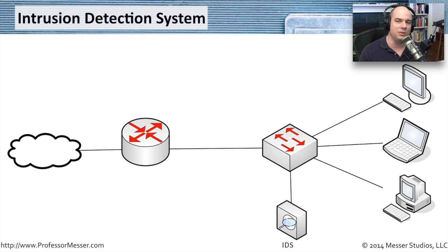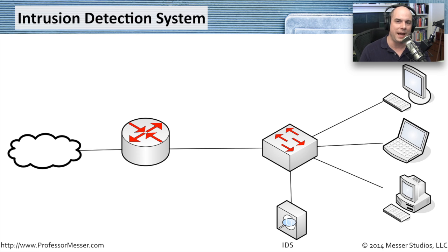The intrusion detection system sees all of the traffic going back and forth and can then inform you: at this date and time, it logged an event where a particular IP address from the internet was accessing a particular web server and performed a specific vulnerability attack — such as database injection or a known Microsoft operating system exploit. Having that in place gives you a record of what has occurred over time across your network.